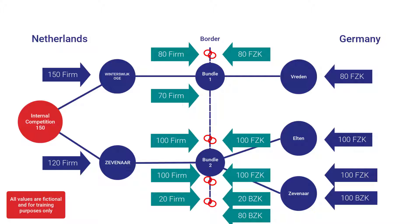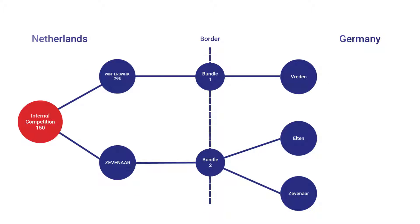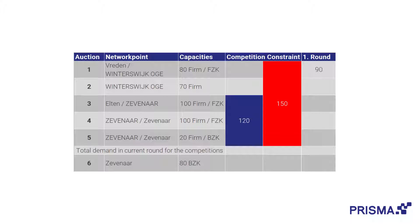This means there are five competing auctions in total in this constellation. A long-term auction example could look like this. In auction 1, we have an aggregated demand of 90; in auction 2 of 5; in auction 3 of 0; in auction 4 of 110; in auction 5 of 14; and in auction 6 of 17. The only auction not in competition is auction number 6, which ends after round 1 due to the undersell.